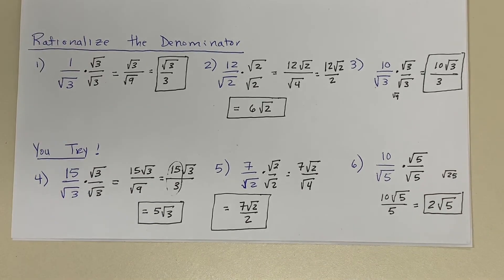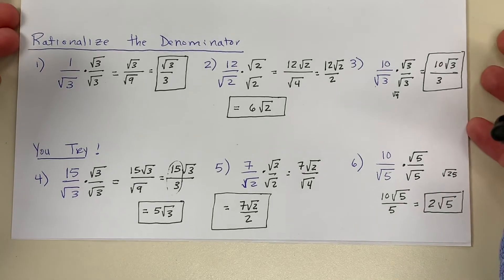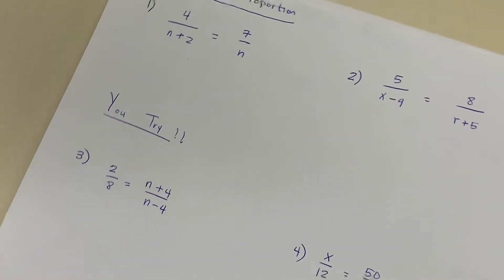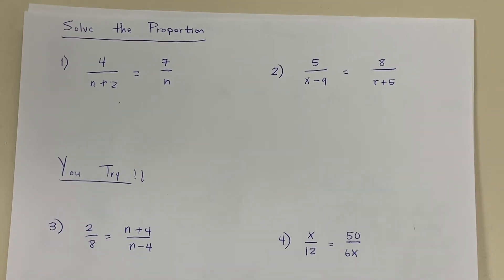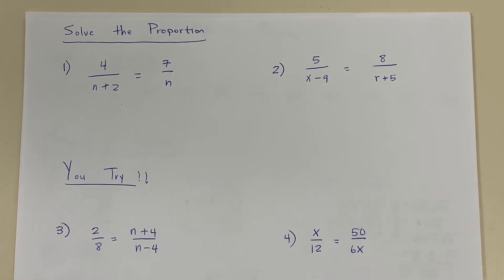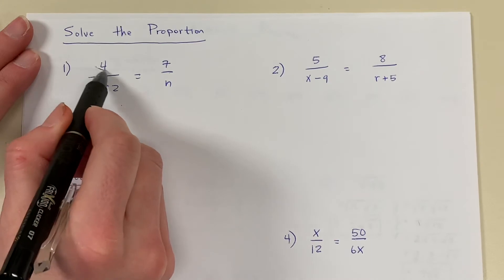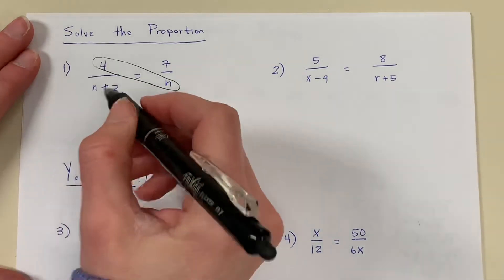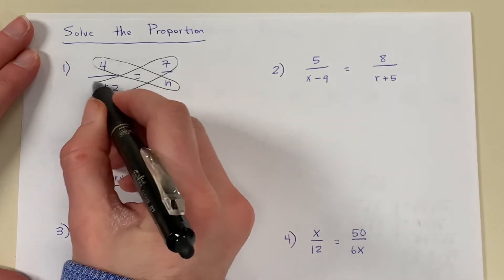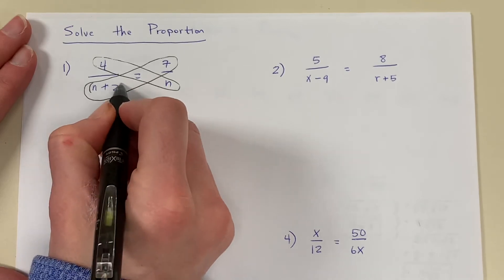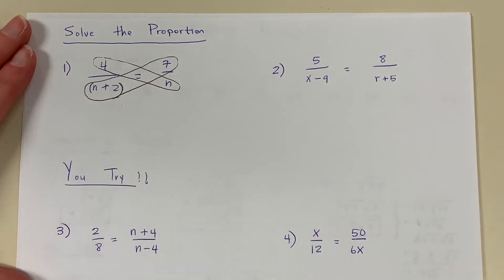This is called rationalizing the denominator. The last type of review problem I want to look at is solving a proportion. To solve a proportion, we cross multiply. In problem number 1, I'm going to multiply 4 by n, and I'm going to multiply 7 by the quantity n plus 2. Anytime I have a quantity, I'm going to put that quantity in parentheses.